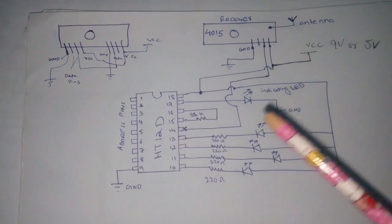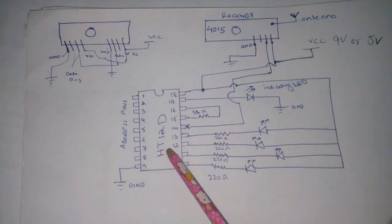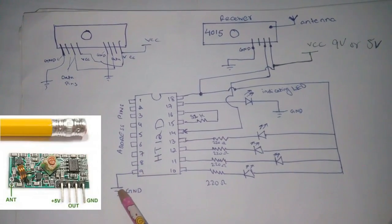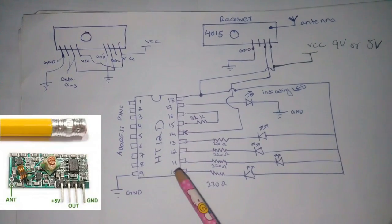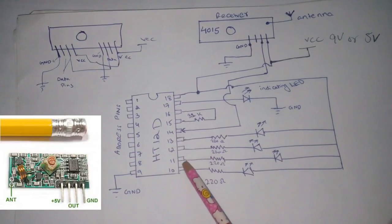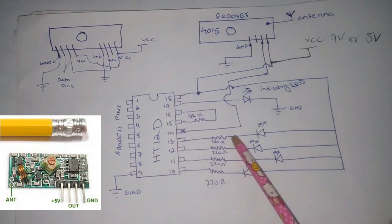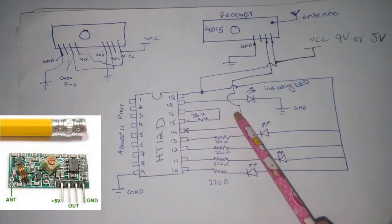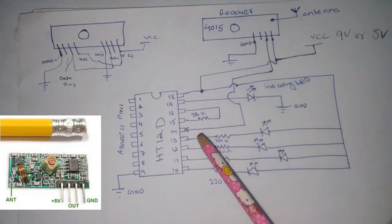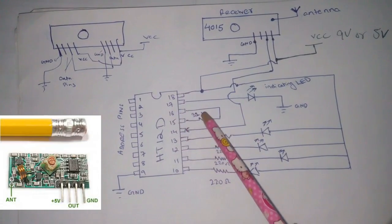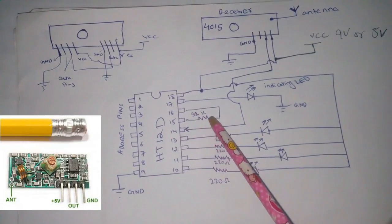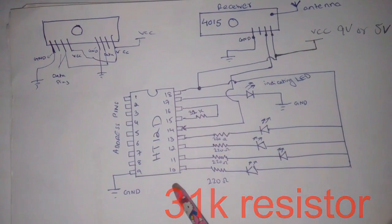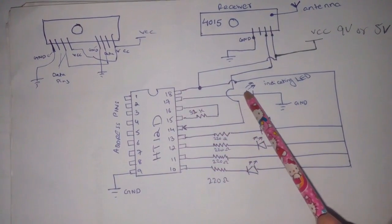This is our receiver circuit. This is the HT12D decoder IC — it also has 18 pins. This is pin number 9, and it is connected to ground. These pins are output pins, from pin number 10 to pin number 13. Pin number 14 is the data pin, to which the data is fed from the receiver module. Pin number 15 and pin number 16 are the oscillator pins — here we also use a resistor for matching the frequency.